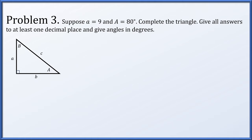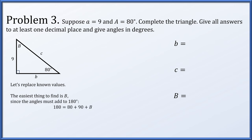Alright, suppose side a is equal to 9 and angle A is equal to 80 degrees, complete the triangle, giving all answers to at least one decimal place and angles in degrees. So what we need to do is find two missing sides and one missing angle. Let's just take our diagram and mark off what we know. The angle A was 80 degrees, the side a was 9. Now the easiest thing to find is the missing angle B. Because all the angles of a triangle add up to 180 degrees, we can quickly solve that B must be 10 degrees.